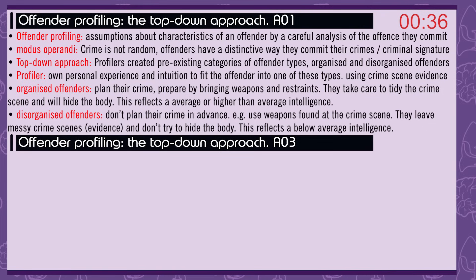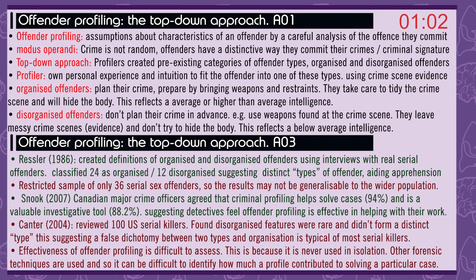Organised offenders plan their crime. They prepare by bringing weapons and restraints. They take care to tidy the crime scene and will hide the body. This reflects average or higher than average intelligence. Disorganised offenders don't plan their crime in advance. They use weapons found at the crime scene. They leave messy crime scenes with evidence, and they don't try to hide the body. This reflects below average intelligence. Ressler in 1986 created definitions of organised and disorganised offenders using interviews with real serial offenders, classifying 24 as organised and 12 as disorganised, suggesting distinct types of offender.